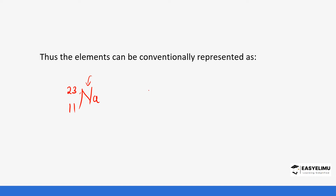For magnesium, it has atomic number 12 at the bottom left and mass number 24 at the top left. So when you see such a symbol, it means the element has 12 protons and a mass number of 24, which represents the total number of protons and neutrons.